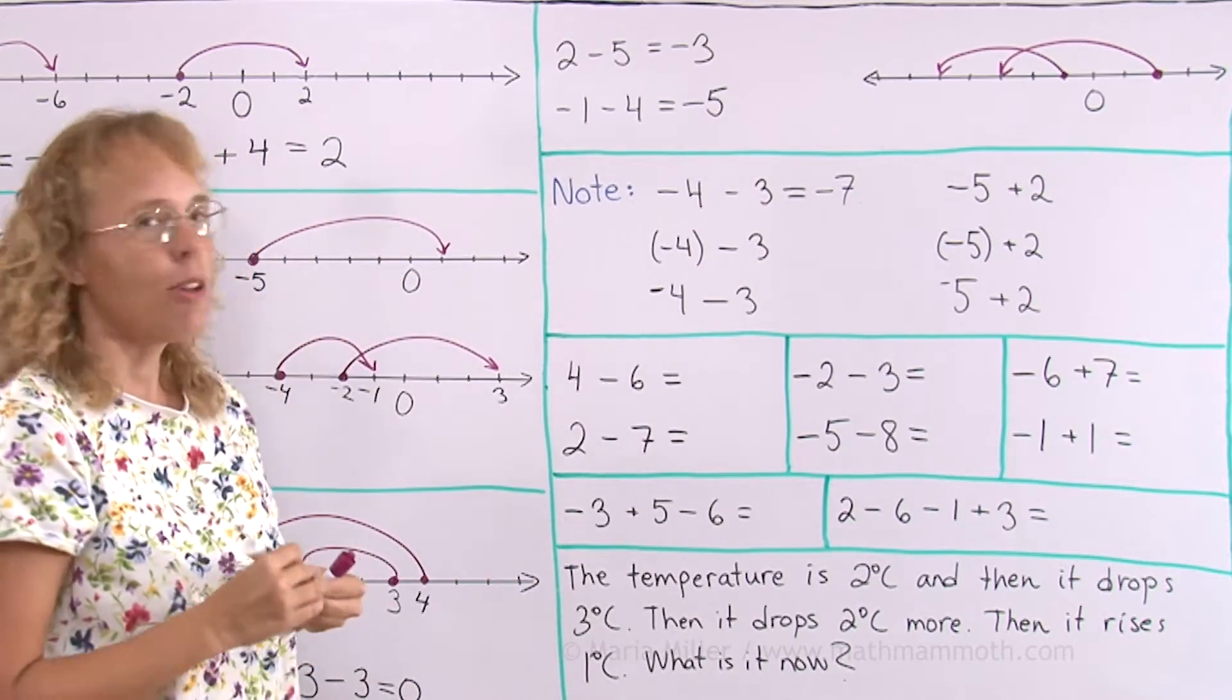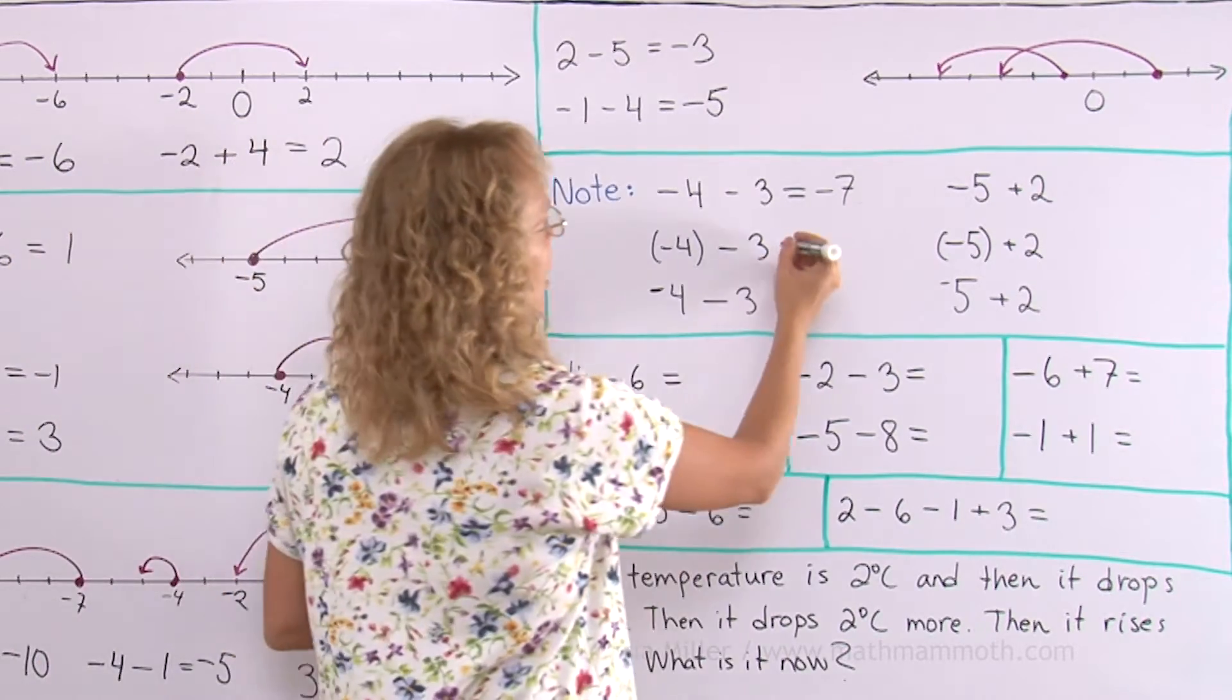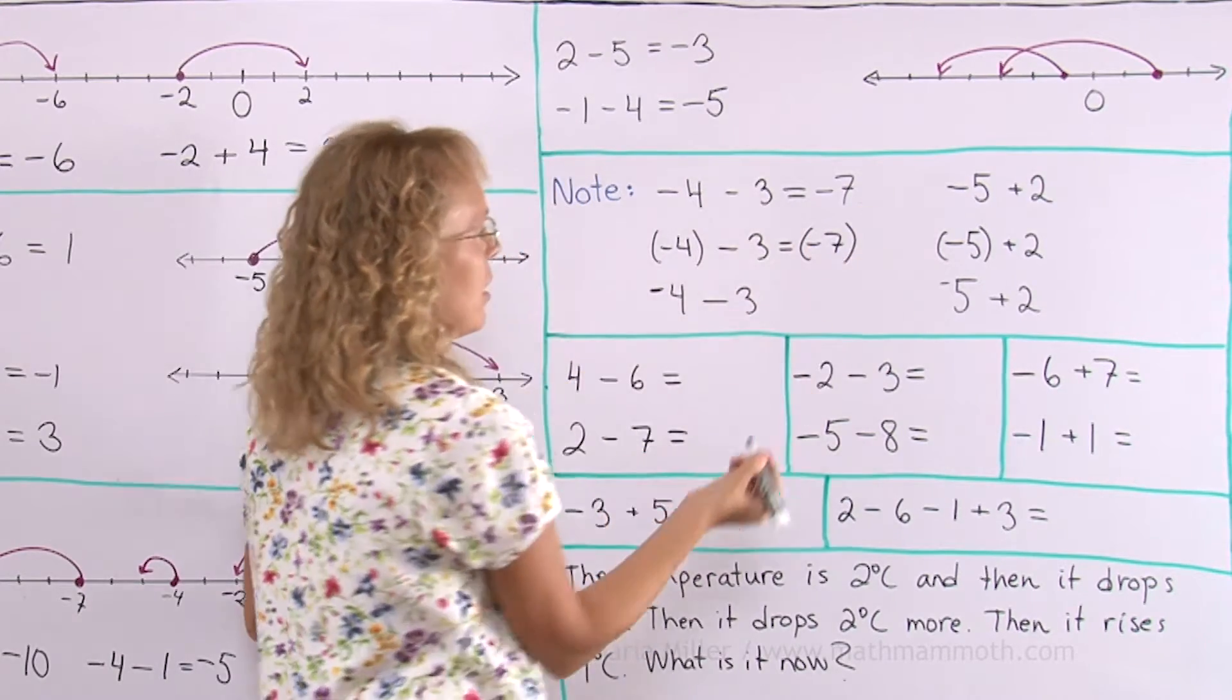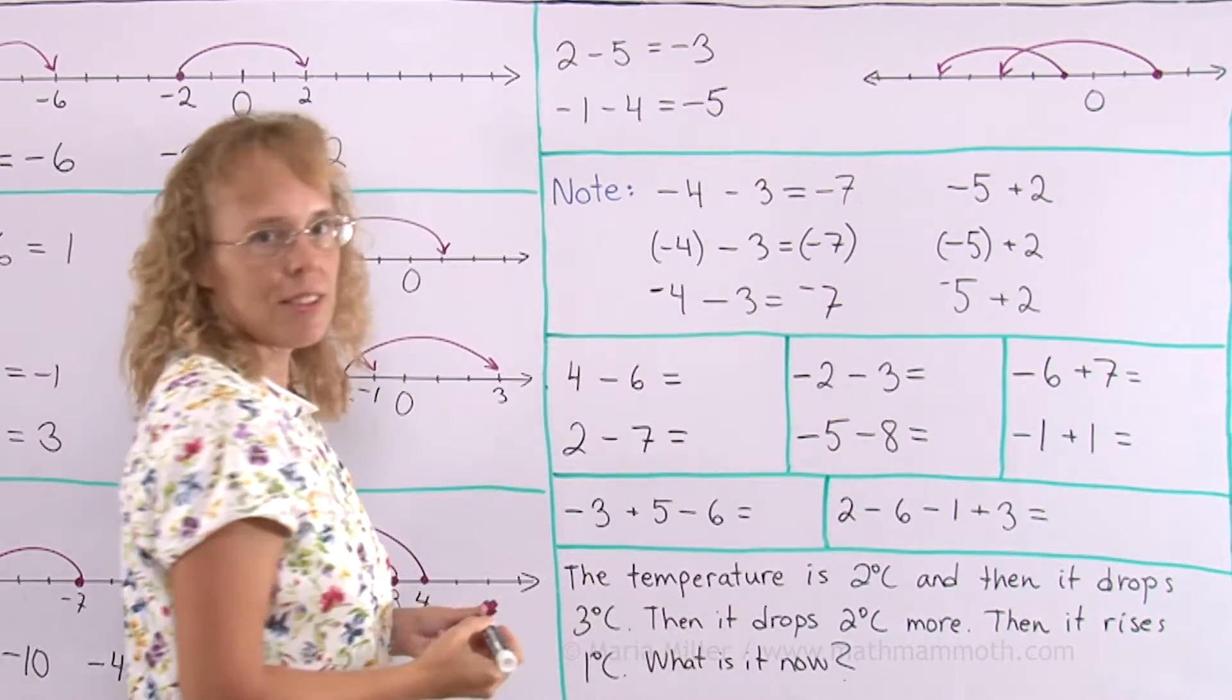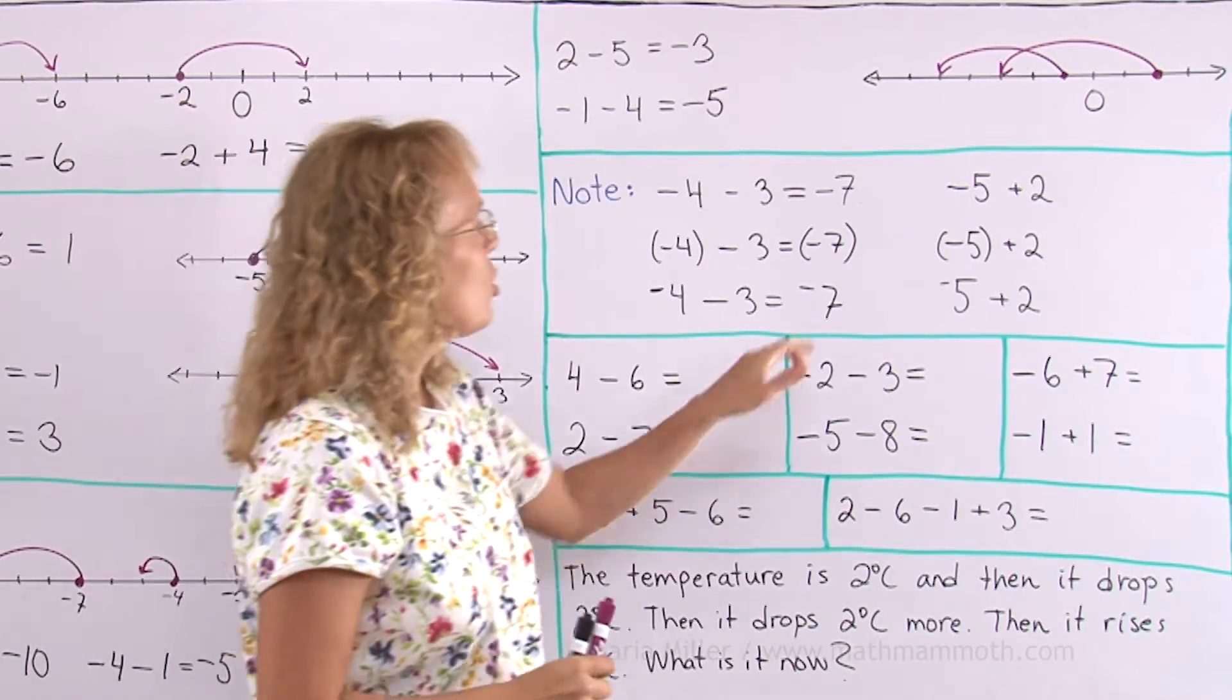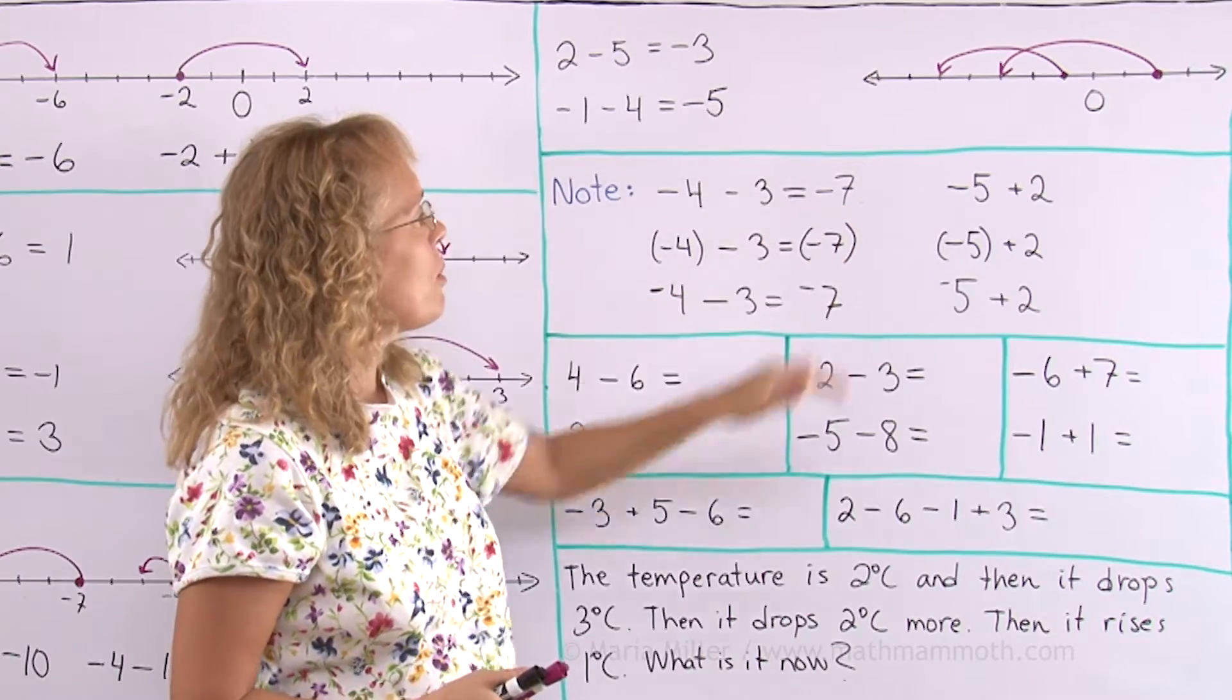Basically you just add 4 plus 3 equals 7, that's how many negatives you have in the end. All of these are negative 7. I could put negative 7 in parentheses, or I could use the elevated negative sign or minus sign. However, usually the answer alone is not put into parentheses. It's correct, but this is more common.